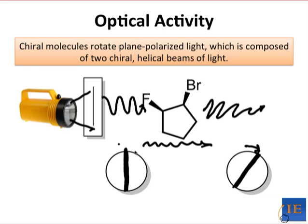The reason for this has to do with the fact that we can treat this plane-polarized light as actually two different contributions, helical light rotating this way and helical light rotating this way. You might call one right-handed and one left-handed.